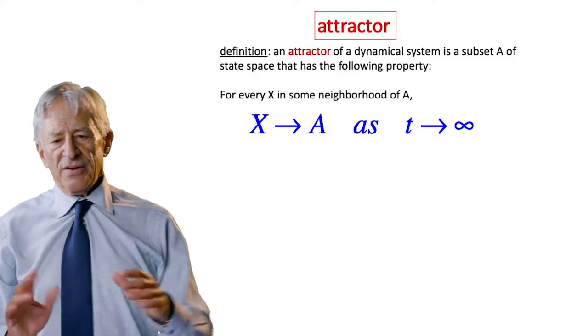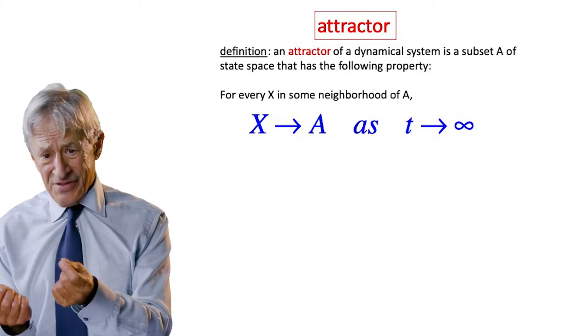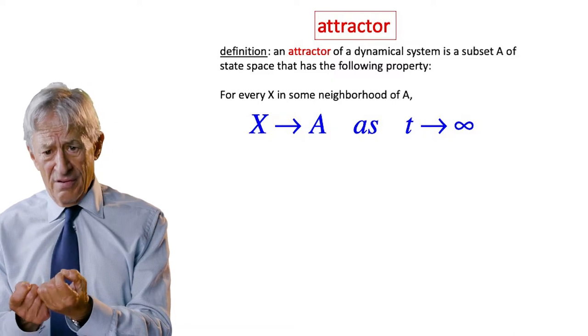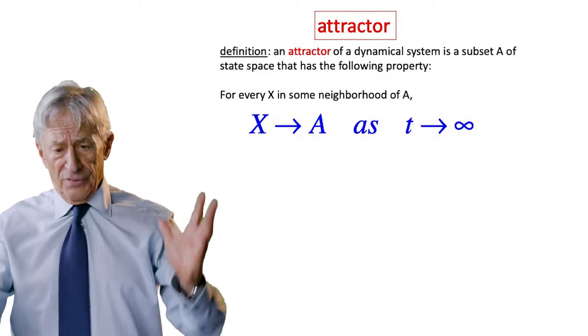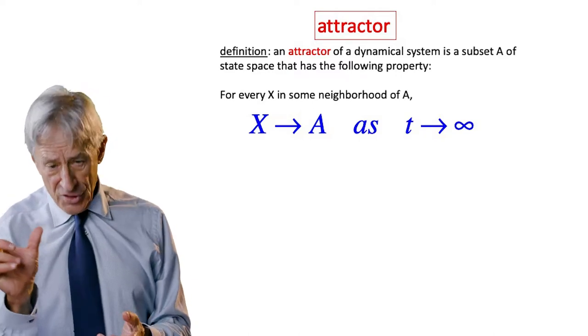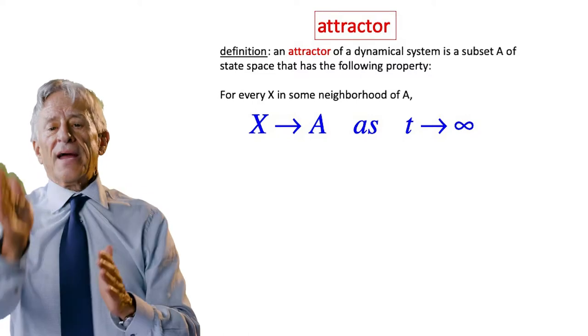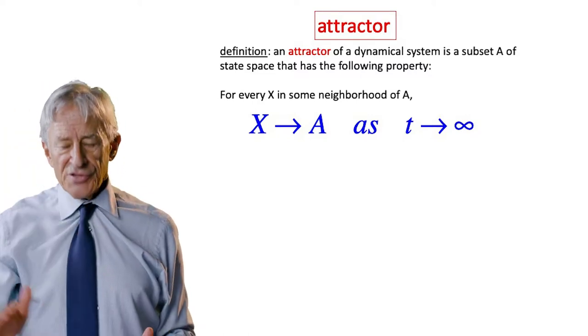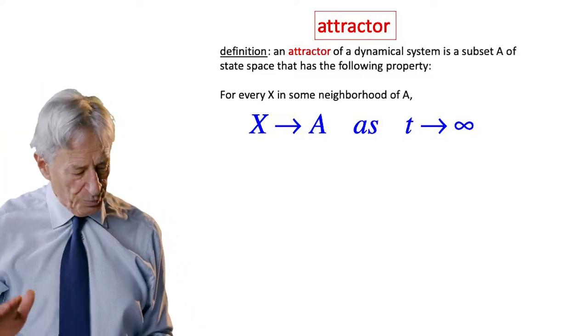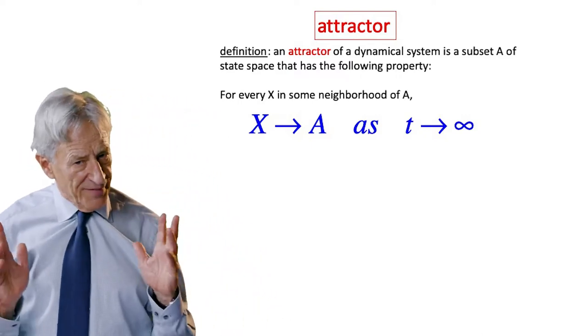In other words, it's called an attractor because it attracts nearby state points. And all nearby state points in a certain neighborhood get swept to the attractor as T approaches infinity. That's the definition.